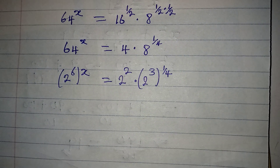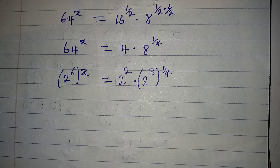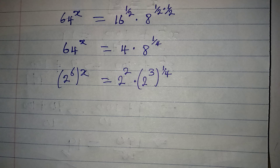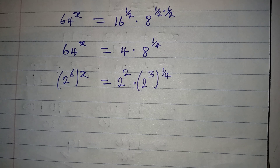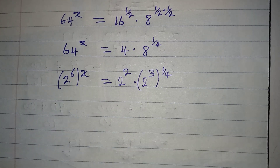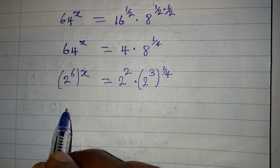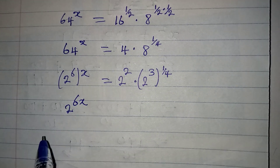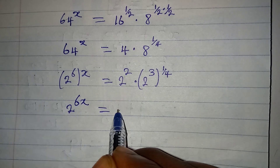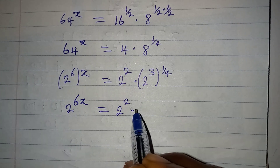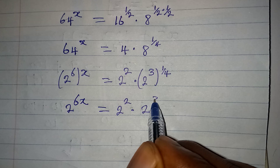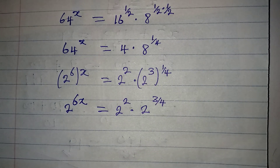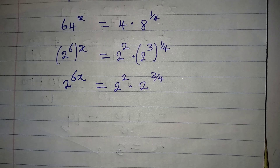There's a law that says we can always multiply two powers provided they are separated by a bracket, just like we have in this case. So we have 2 to the power of 6x on the left, which will be equal to 2 to the power of 2 multiplied by 2 to the power of 3 over 4 — I've multiplied the powers there.